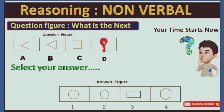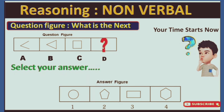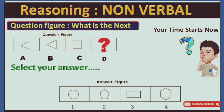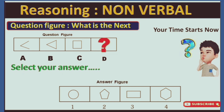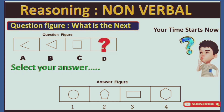Here in the question figure, we can see the lines are increasing one by one — A, B, C, and D accordingly. So what will be the answer for D?